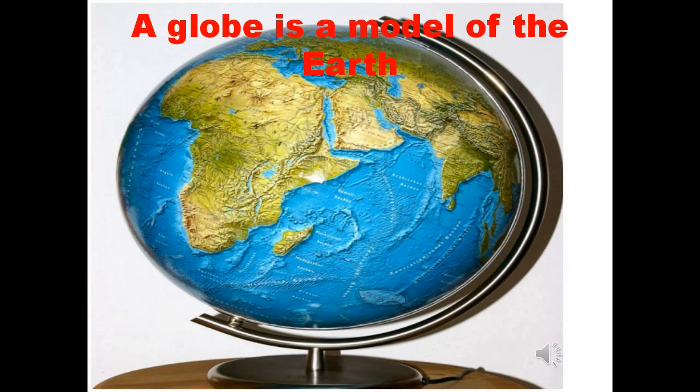The earth is so big that we cannot see all the places on it at the same time. We need a smaller model of the earth to understand how it looks. A globe is a model of the earth. It is round and shows land and water. But even on a globe, we can only see half of the earth at a time. We need to rotate it to see the other half.